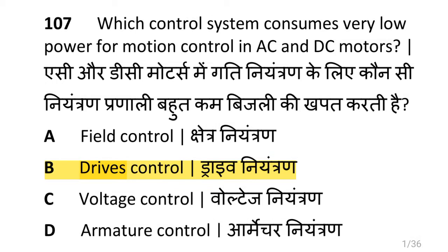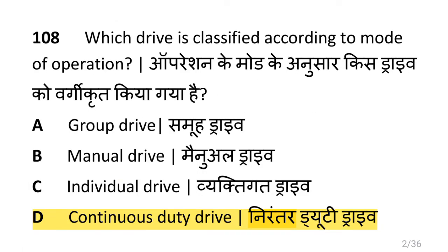Dear friends, we are going to see AC-DC motor drives. Which control system consumes very low power for motion control in AC and DC motors? That is drives control. Which drive is classified according to mode of operation? That is continuous duty drives.